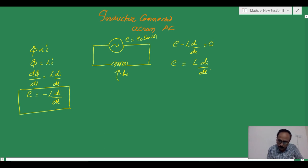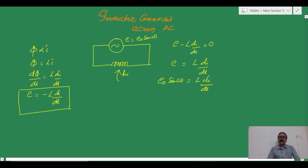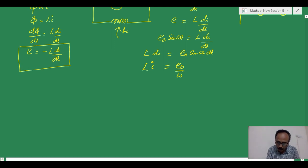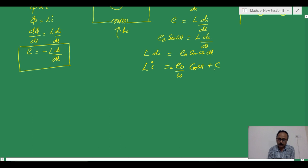Since E = E0 sin(ωt), we have E0 sin(ωt) = L(di/dt). Integrating both sides: the integral of di gives i, and the integral of E0 sin(ωt) gives minus cos(ωt)/ω. Therefore, i = minus(E0/Lω) cos(ωt) + c. This constant c can be made zero because the current term cannot be constant in an AC circuit.